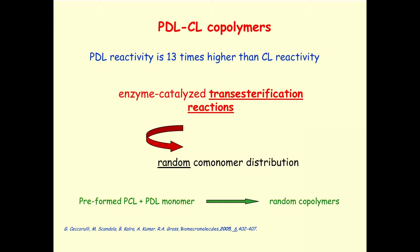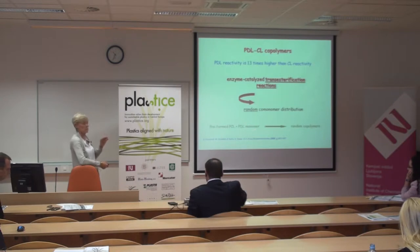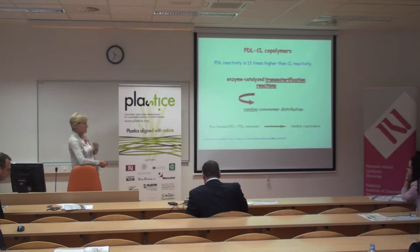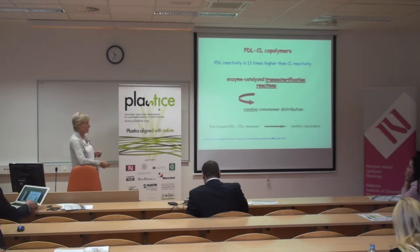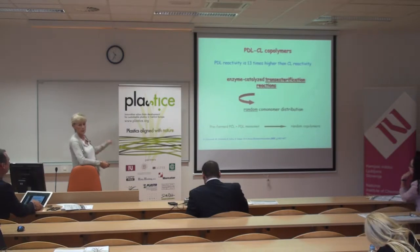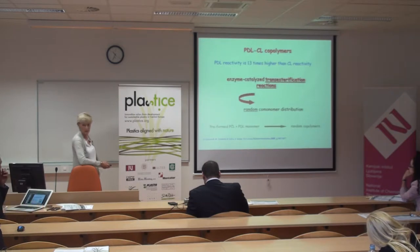I will exemplify with the pentadecalactone–caprolactone co-polymers, though what I say applies to the other systems too. Since pentadecalactone is much more reactive than caprolactone in ring-opening polymerization, we would expect blocky co-polymers. Instead, we find completely random co-monomer distribution — because the enzyme not only catalyzes the reaction but also catalyzes trans-esterification, causing reshuffling of units along the chain.